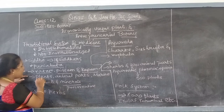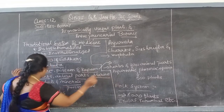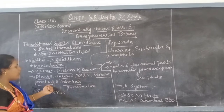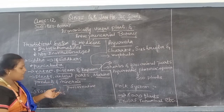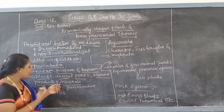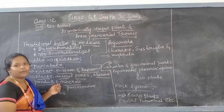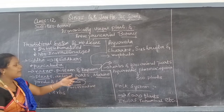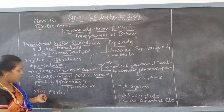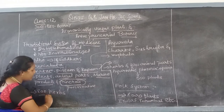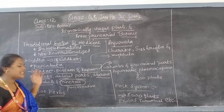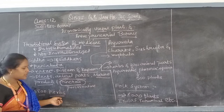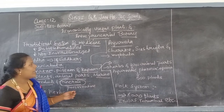Siddha medicine uses plants, animal parts, marine products, and minerals as medicines. They are not using any preservatives — minerals serve as preservatives, giving the medicines a long shelf life. Under Siddha medicine, 800 herbs have been identified and declared as proven drugs for the Siddha system of medicine.